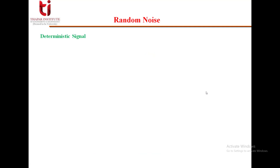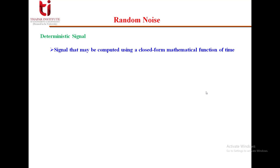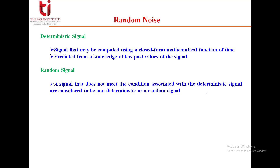Before starting with noise, let's define a deterministic signal and then move to a random signal, from which we will develop a definition for random noise. A signal that may be computed using a closed-form mathematical function of time, or that can be predicted from knowledge of a few past samples, is called a deterministic signal — we can represent it in equation form.